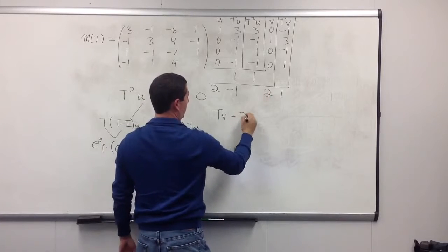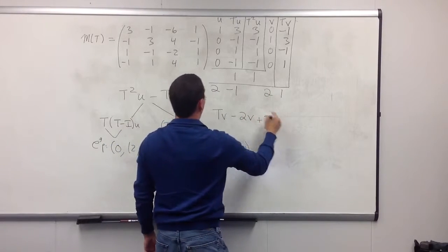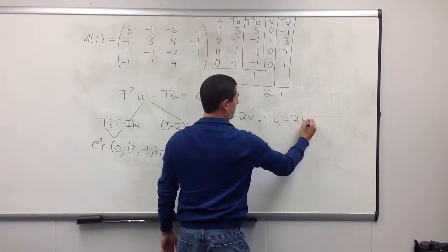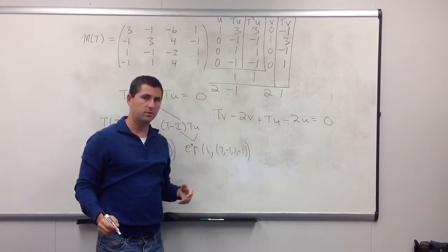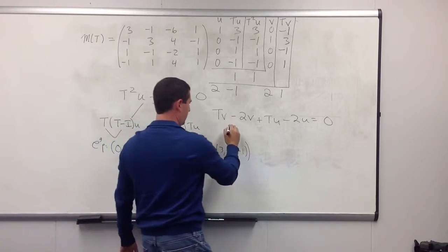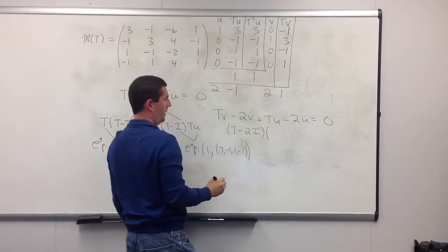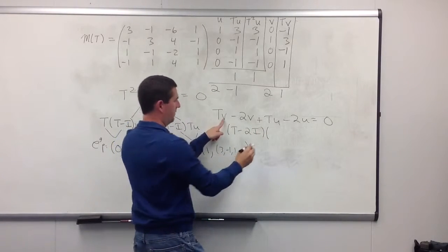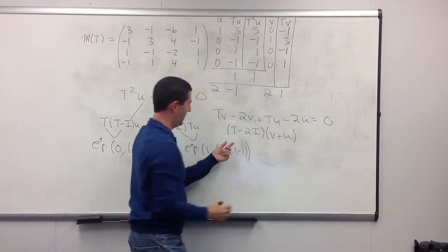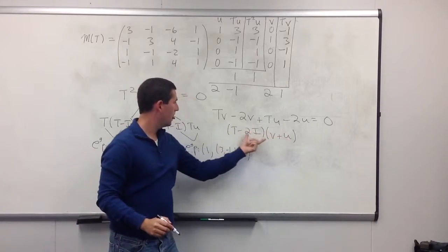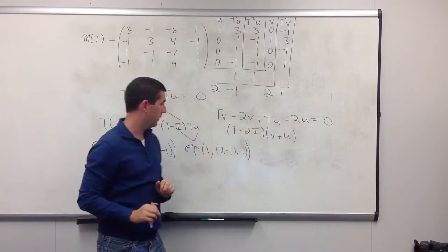Tv minus 2v plus Tu minus 2u equals 0. A little bit of mental gymnastics here. You see that this is (T minus 2I) evaluated at, well, let's see. I'm going to have to have a v, and I'm going to have to have a u, so this will be v plus u. Does it make sense? Let's see. Tv, Tu, minus 2v, minus 2u. Okay. This works.